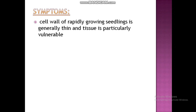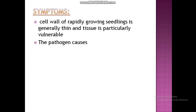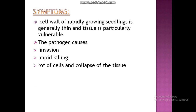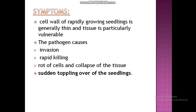The symptoms of damping off include: the cell wall of rapidly growing seedlings is generally thin and the tissue is particularly vulnerable to disease. The pathogen causes rapid invasion and killing of root cells, and collapse of the tissue, followed by sudden toppling over — that is, falling or breaking of seedlings after infection.